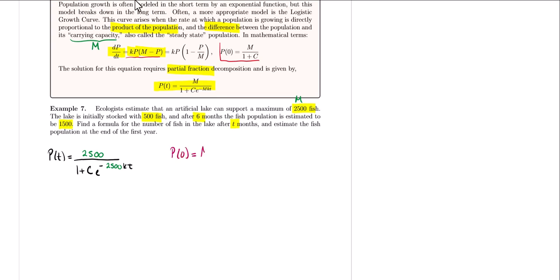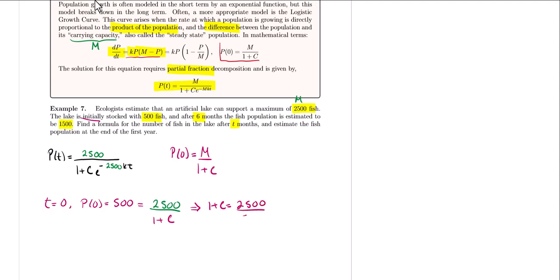The problem tells us the lake is initially stocked with 500 fish, so at t = 0, P(0) = 500. This equals the carrying capacity 2,500 divided by 1 plus C. So 1 plus C equals 2,500 divided by 500, which equals 5. Therefore C equals 4.